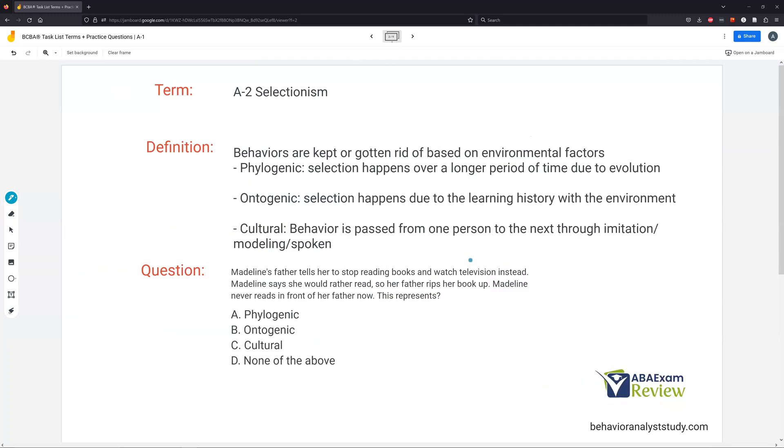So let's start with selectionism. Selectionism, behaviors are kept or gotten rid of based on environmental factors. Now, this is what determines how do behaviors change in the future. If we look at phylogenic, phylogeny, selection happens over a long period of time due to evolution. So us as humans have evolved over hundreds and hundreds and hundreds of years, and we keep certain behaviors that have kept our species going, and we get rid of other behaviors. Animals do the same thing. Animals that survive tend to pick behaviors that help them survive longer and longer. So phylogenic happens over hundreds of years, a long, long period of time.